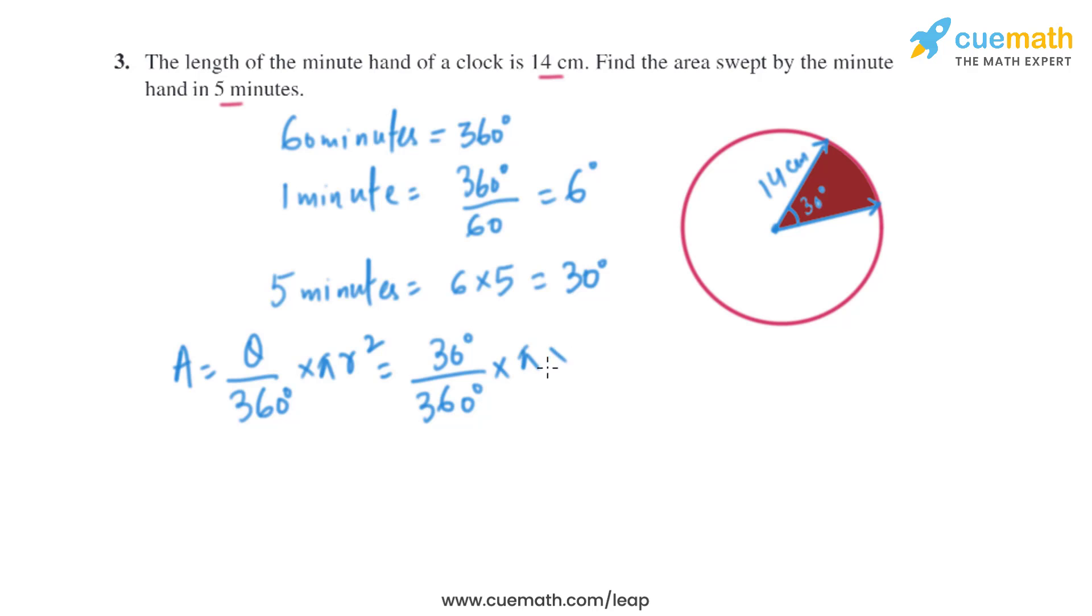On solving this we will get 1 over 12 multiplied by 22 divided by 7 multiplied by 14 and 14. On further solving this, we will get the final area of the sector as 154 divided by 3.